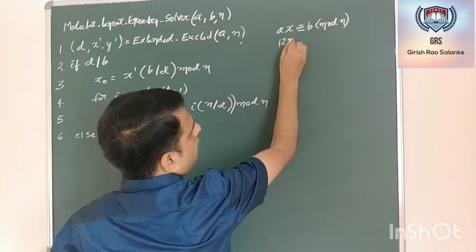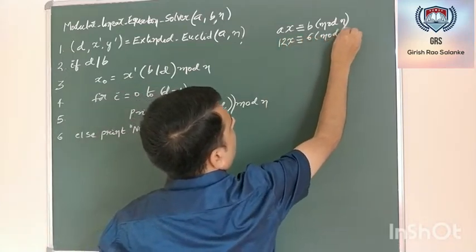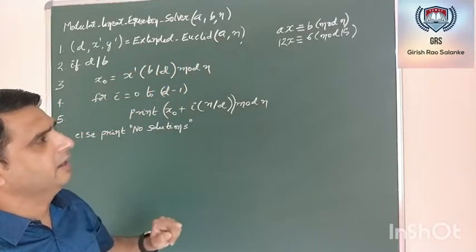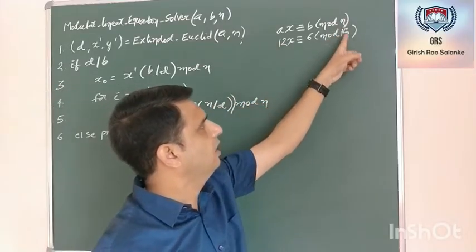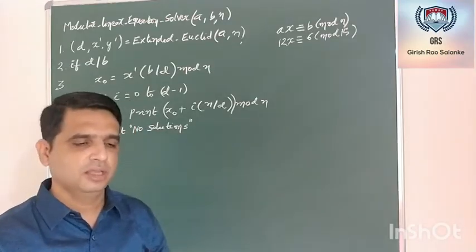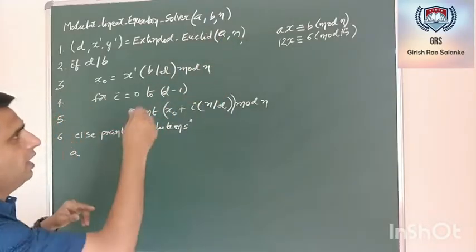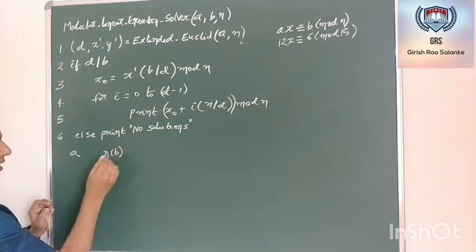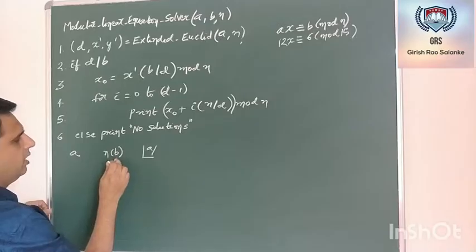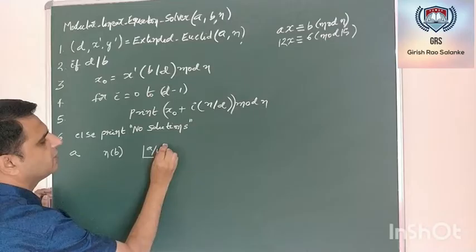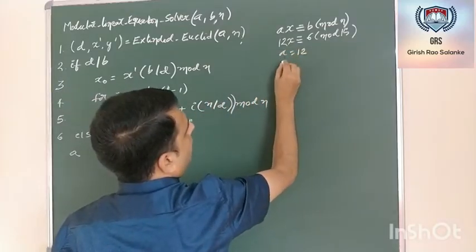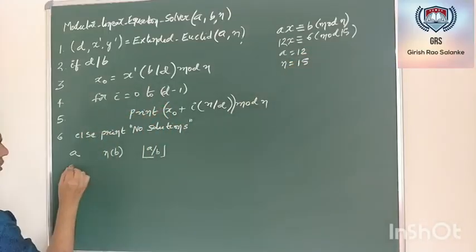Let me take the example from earlier: a is 12 and n is 15. I will prepare a table as we did in the extended Euclid's algorithm. Columns are a, b (which is n), and floor of a divided by b. The initial value of a is 12 and b is 15. 12 divided by 15 is 0 point something, so the floor is 0. In the next iteration, since a is less than b, we have an extra recursive call. Now it is 15 and 12; 15 divided by 12 is 1 point something, floor is 1. Next, 12 is here and 15 mod 12 gives remainder 3. 12 divided by 3 is 4. Then 3 comes in and 12 divided by 3 is 4, remainder 0. So this terminates.